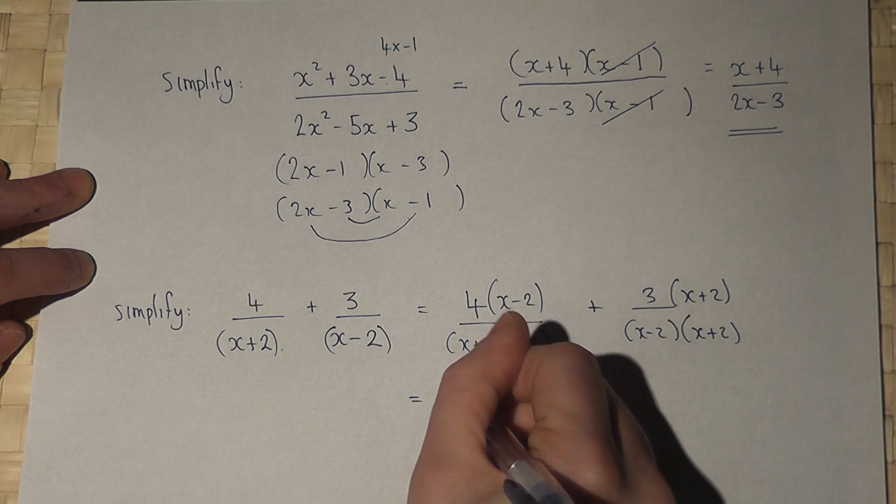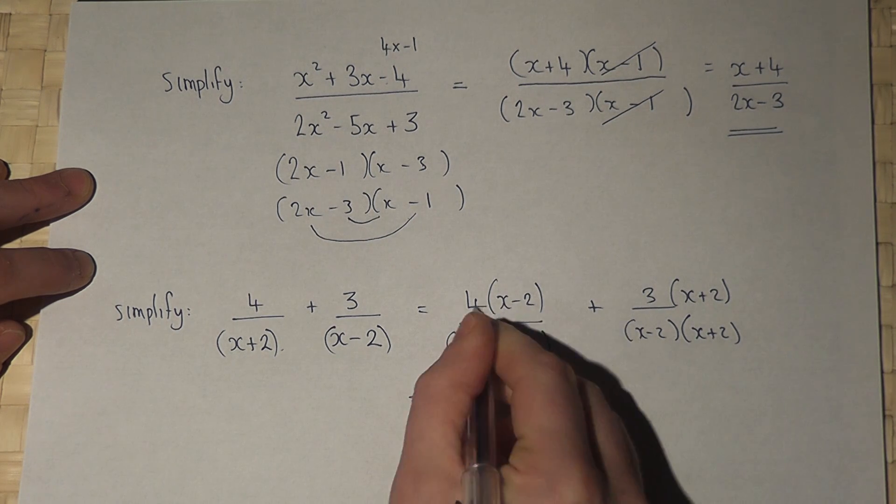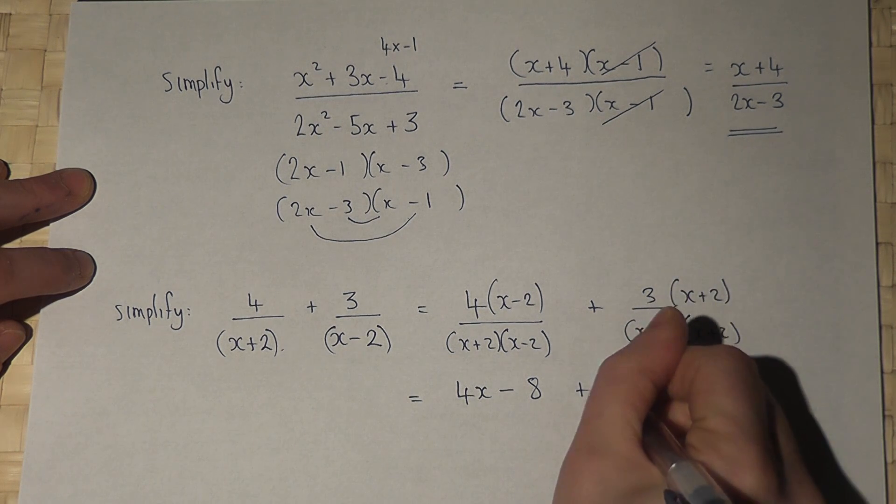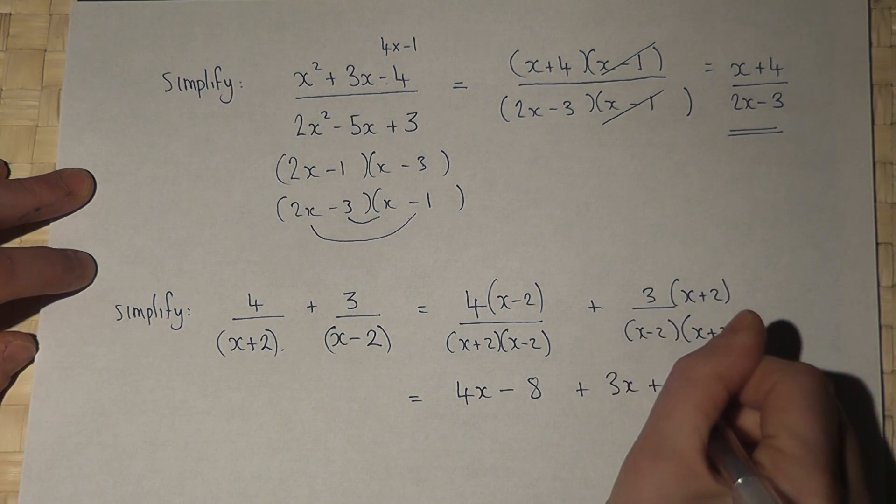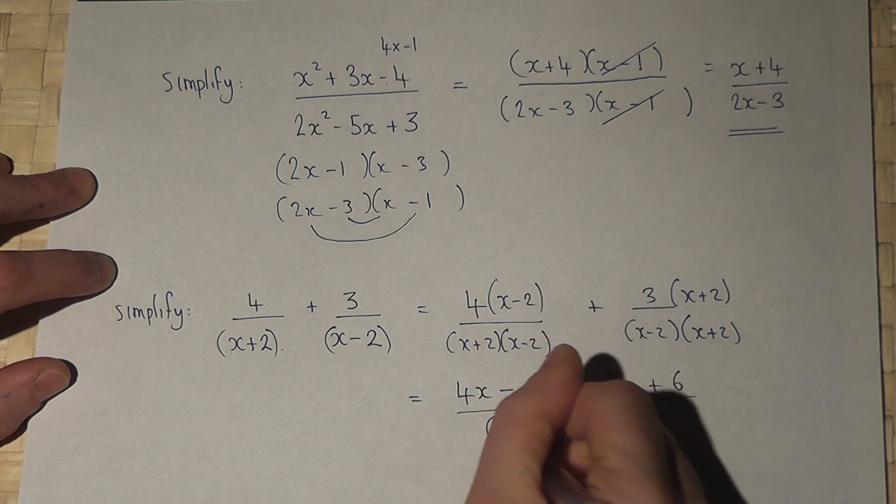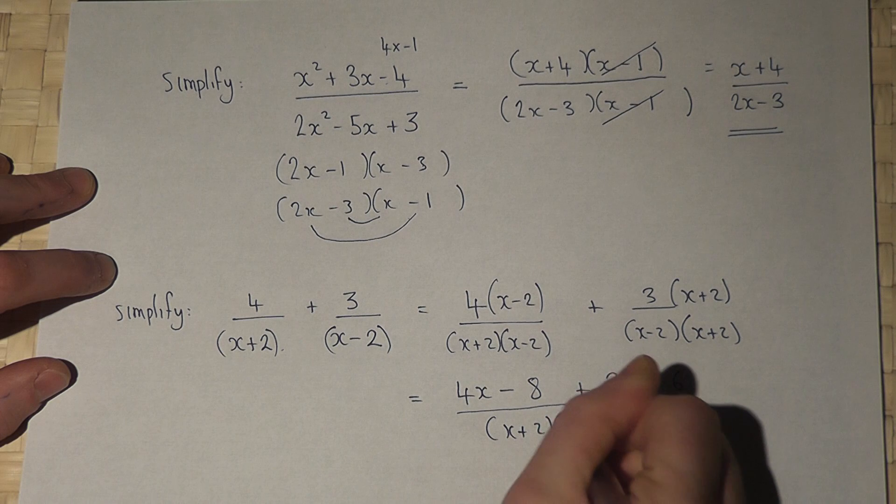So, 4 times x is 4x. 4 times 2 is 8, which is minus. 3 times x is 3x. And 3 times 2 is 6. They are now all over the same denominator.